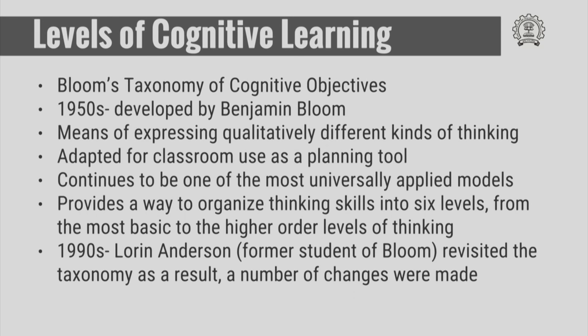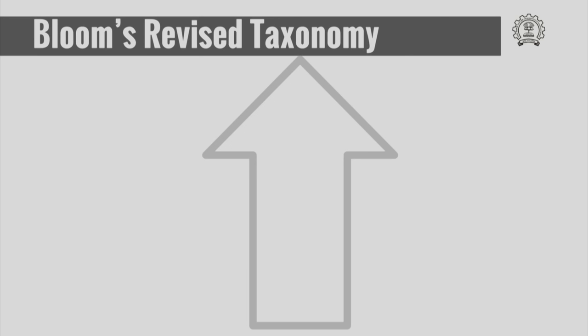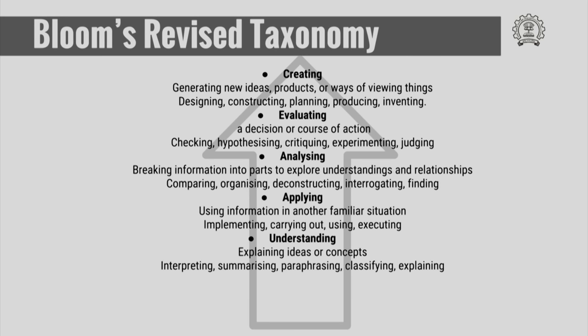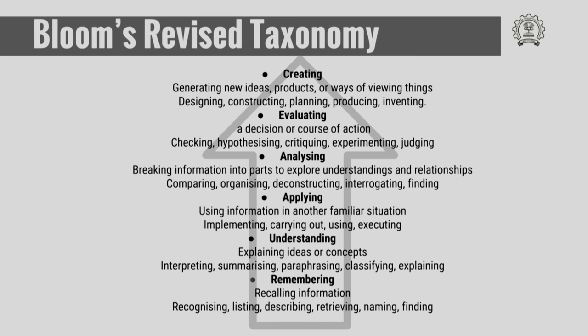Bloom's Taxonomy provides a way to organize thinking skills into six levels, from the most basic to higher-order levels of thinking. In the nineties, Lorraine Anderson, a former student of Bloom, revised the taxonomy, resulting in a number of changes. The revised taxonomy looks like this: creating, evaluating, and analysis are called higher-order thinking; applying, understanding, and remembering are the normal levels of thinking and learning.